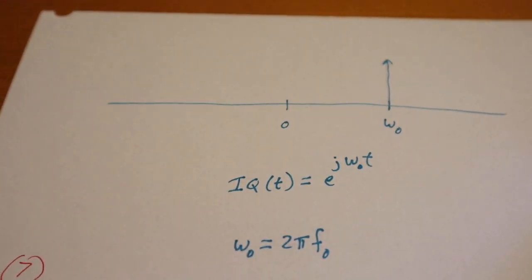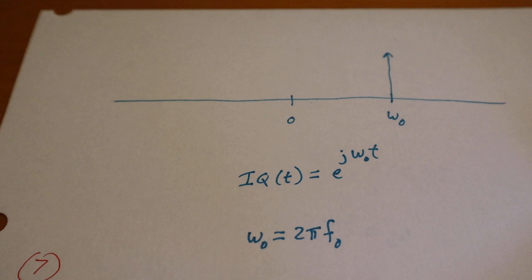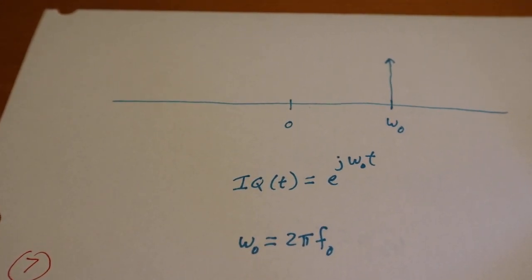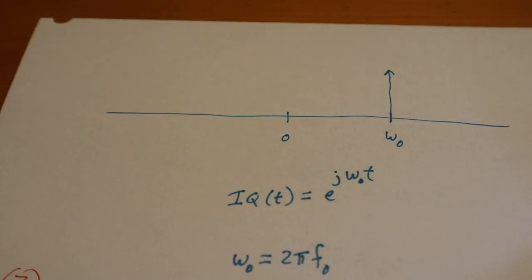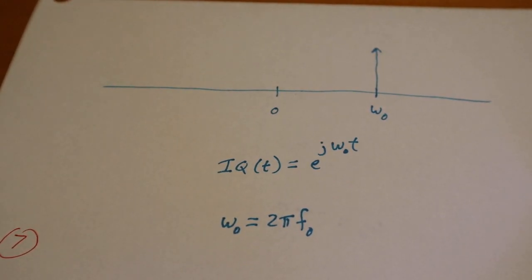Back to these ω terms here. If we just look at this e to the jωt by itself, what we get is a single sine wave tone at ω0. ω0 is 2πf0, so that's how we do a positive complex signal.